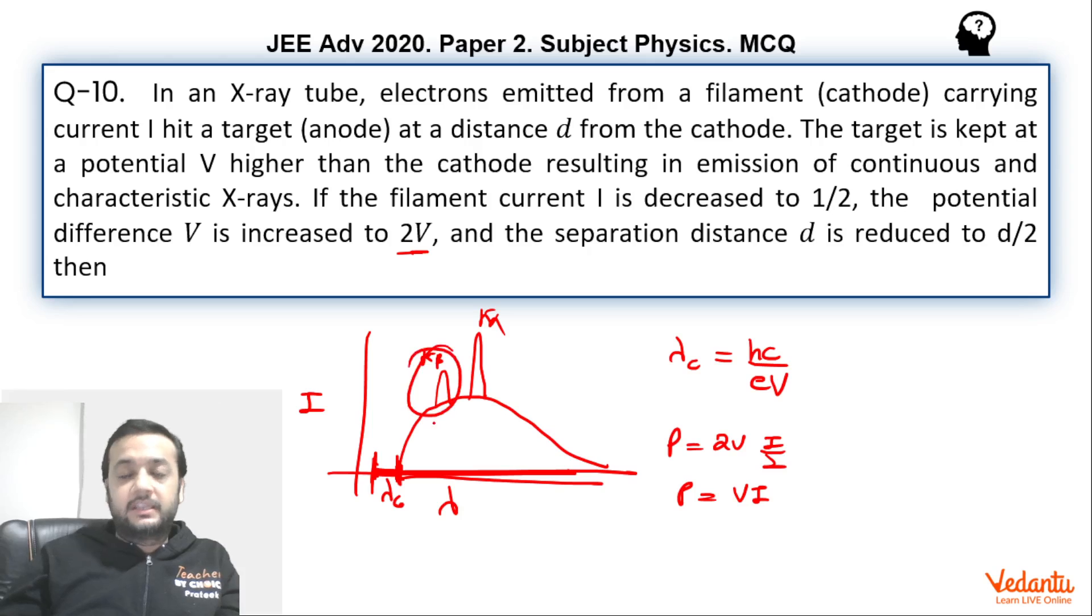For example, if K beta series was not getting emitted before. Suppose cutoff lambda was here. Let's say this was the lambda cutoff initially. Now, if we decrease lambda cutoff, then it might happen that this wavelength starts getting emitted. So in that case, this definitely can be a possibility.